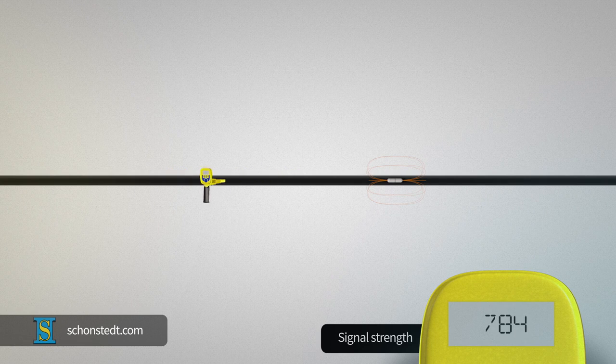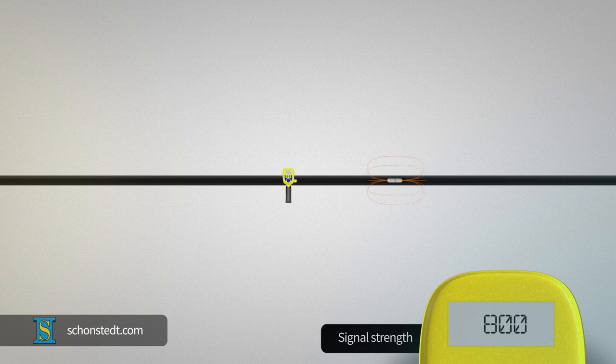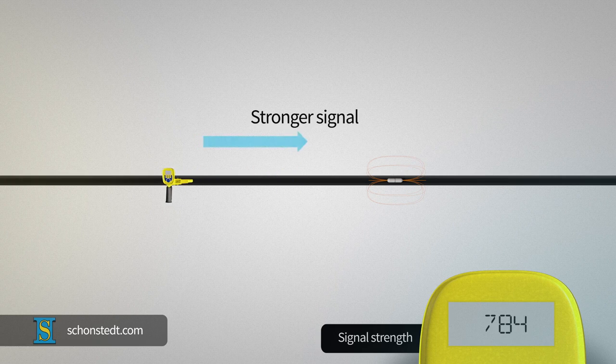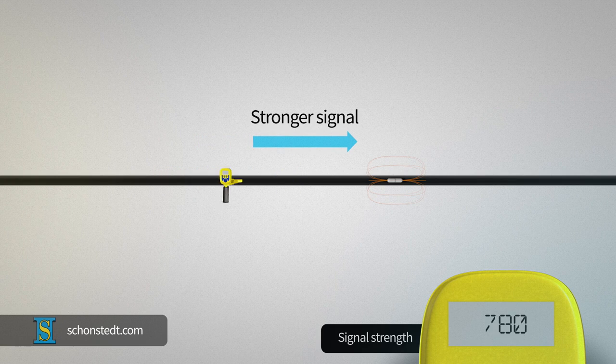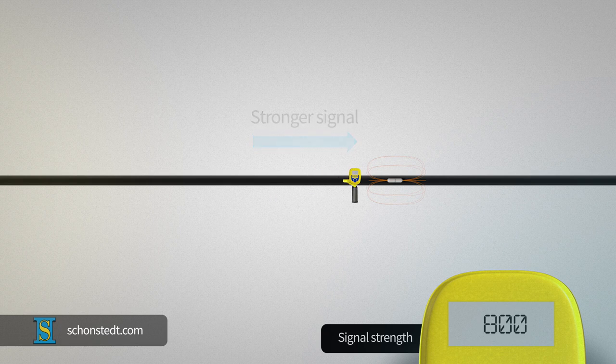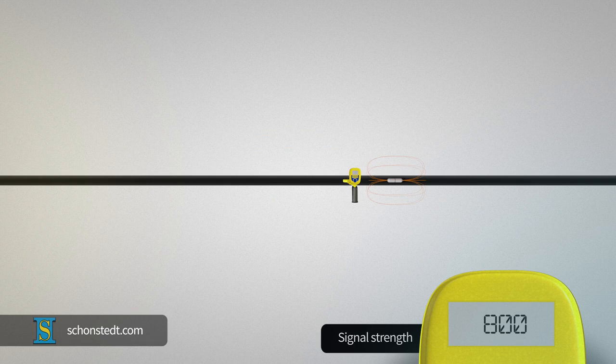move along that axis to the left and the right to determine in which direction the signal becomes stronger. Then, keep moving in that direction while the signal strength increases.